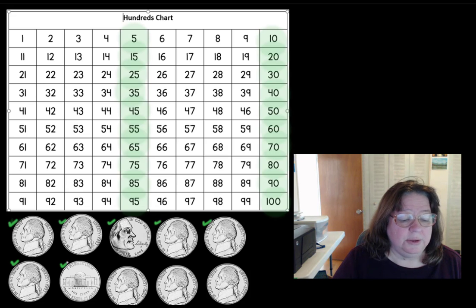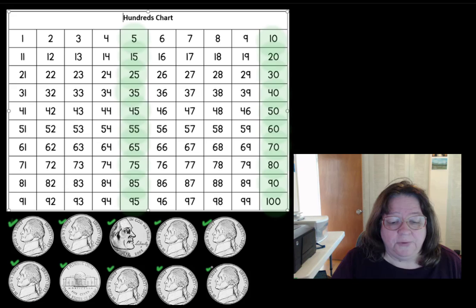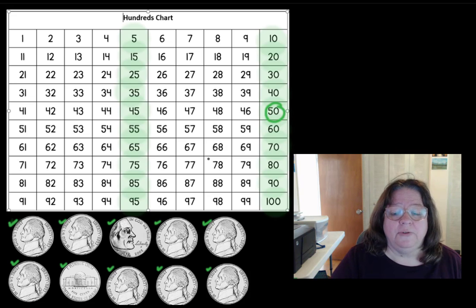30, 35, 40, 45, 50. Let's find 50 on the hundreds chart. There, we just counted by fives, because nickels are worth five cents each.